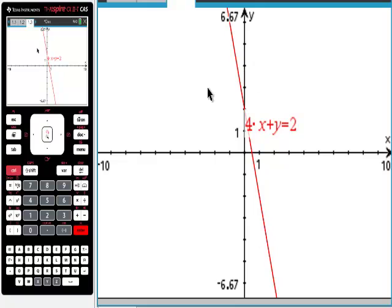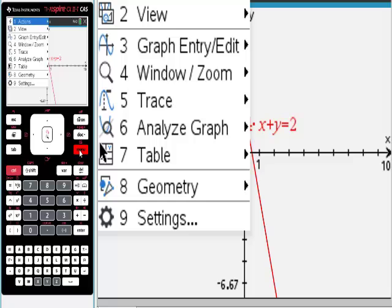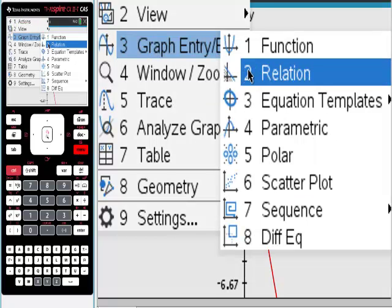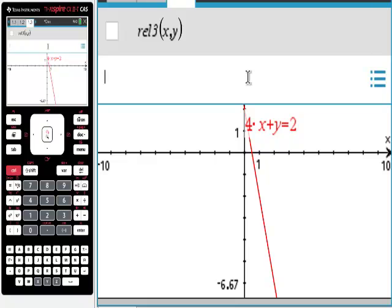We can see it obviously. Now I'll put in the next equation. I'll go back to menu, graph entry, relation. The next one is x minus y equals 3. So I'm going to put in x minus y equals 3. I know it's in lowercase and the other was uppercase—I just messed that up—but it doesn't matter.